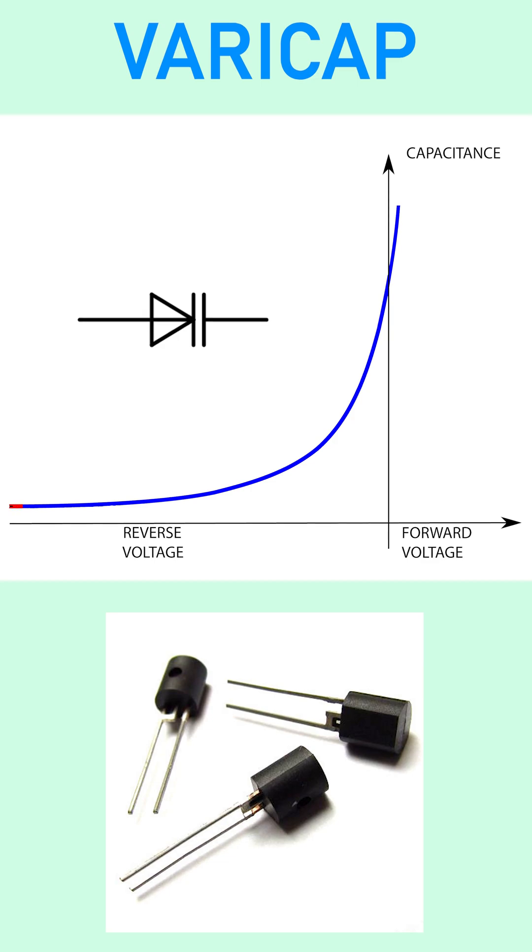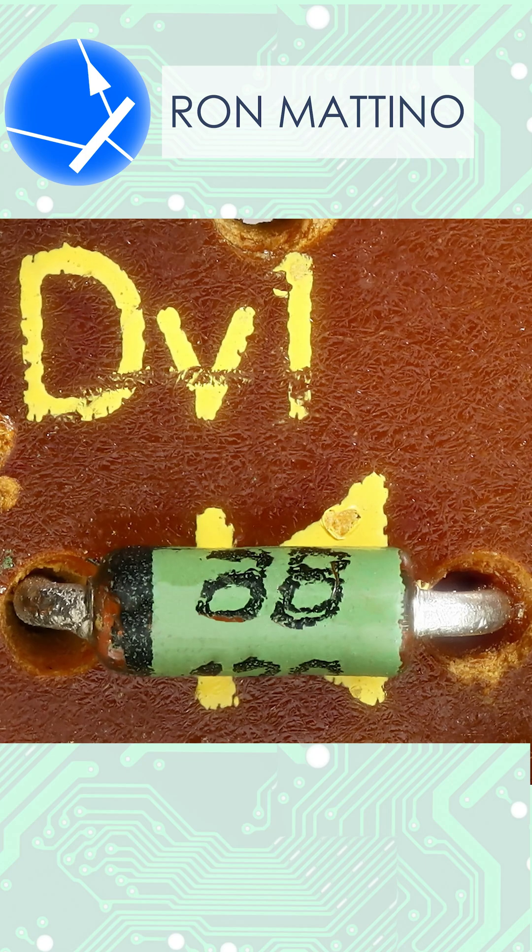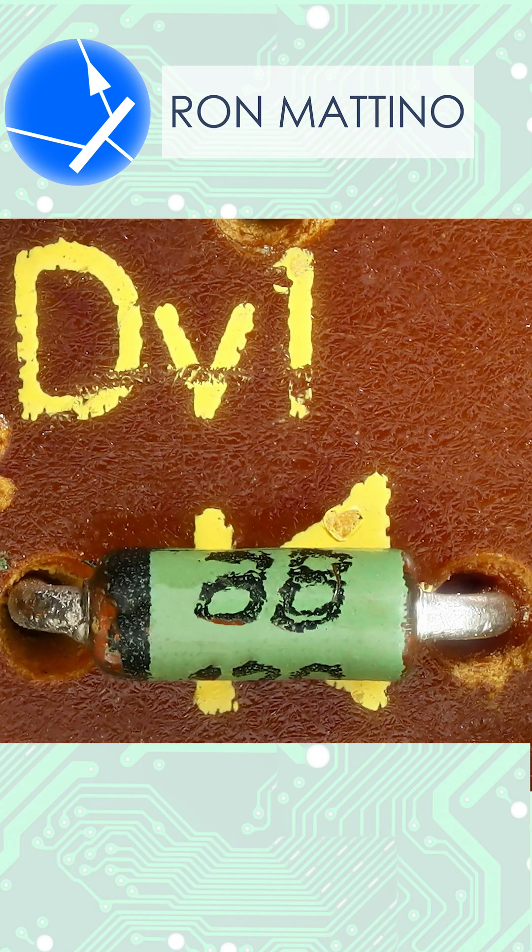Varicap or tuning diode is a component whose capacitance can be controlled by applied voltage. So you could say it's a semiconductor possessing properties of a variable capacitor, hence the name. Varicaps are used in voltage-controlled oscillators and frequency multipliers.